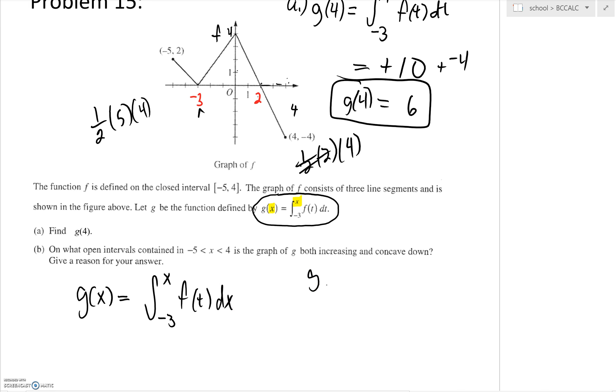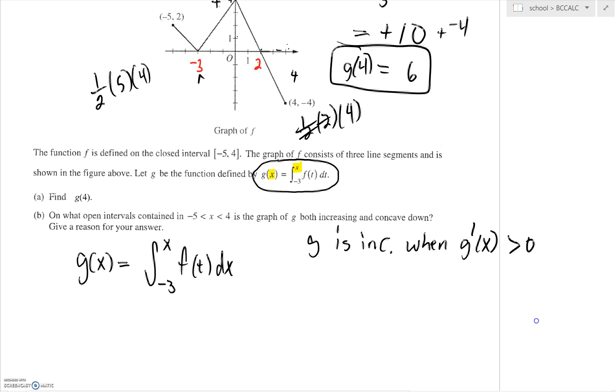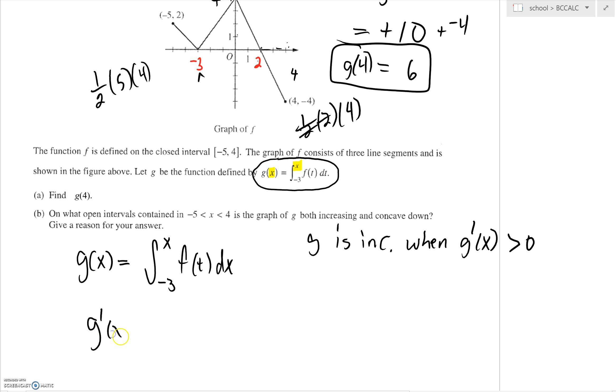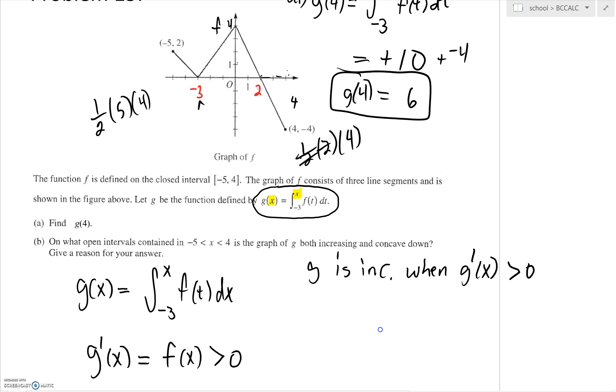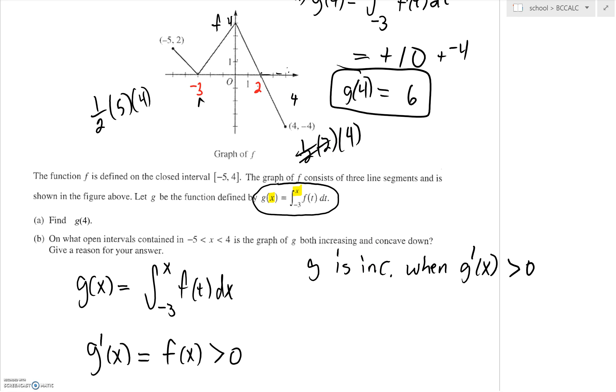That's by definition. G prime of x in this case is just going to be f of x. We've done quite a bit of that. What I'm really interested in is where is f of x greater than zero? You're trying to discover where is this curve above the x-axis.